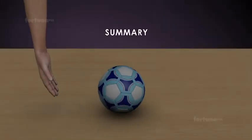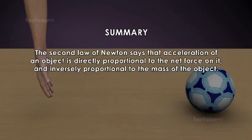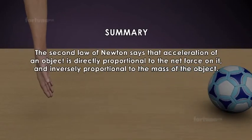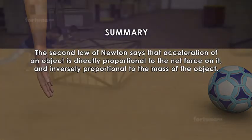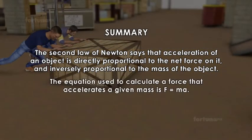Summary: The second law of Newton says that acceleration of an object is directly proportional to the net force on it, and inversely proportional to the mass of the object. The equation used to calculate a force that accelerates a given mass is F equals MA.